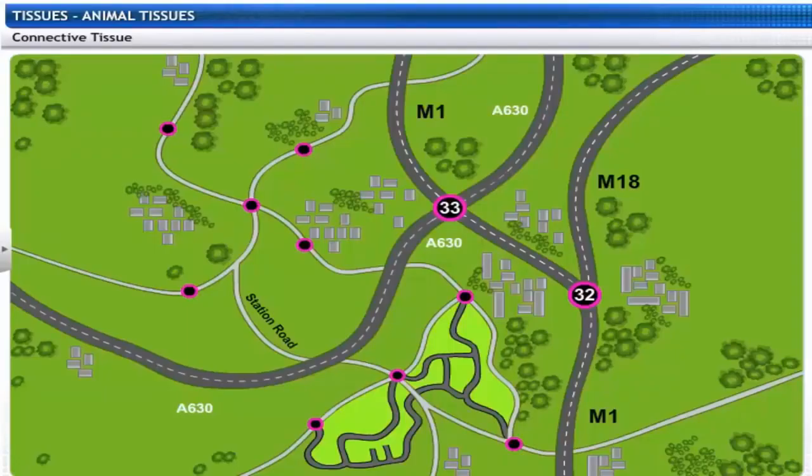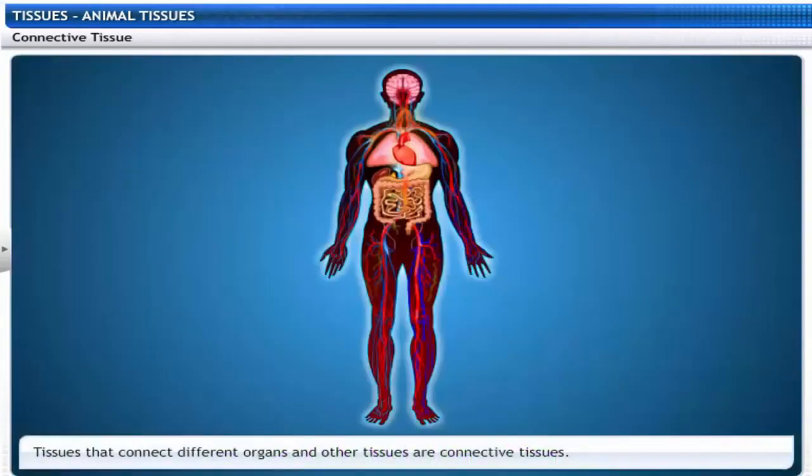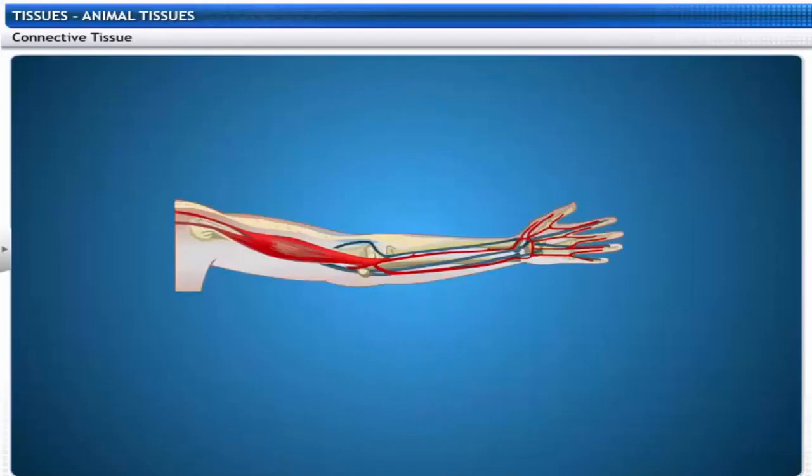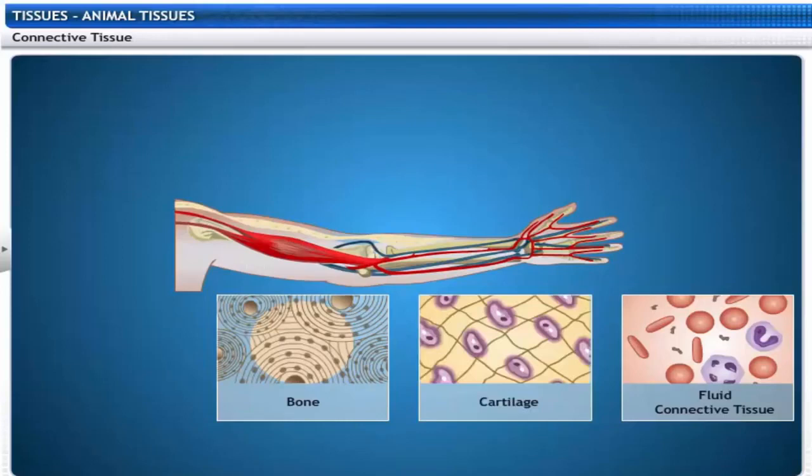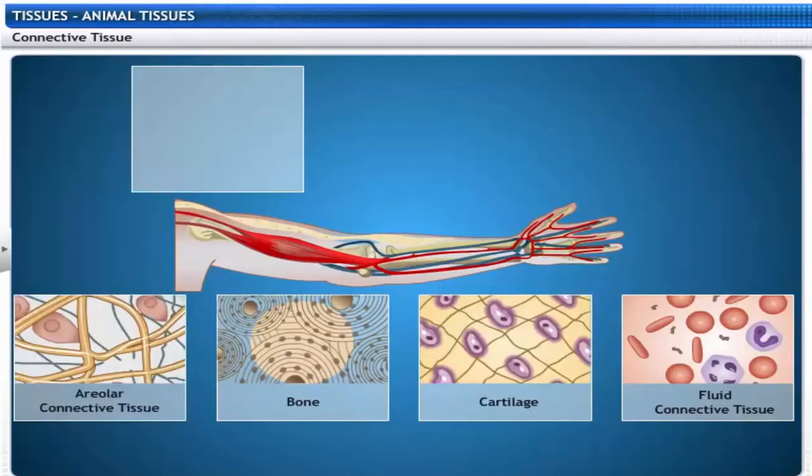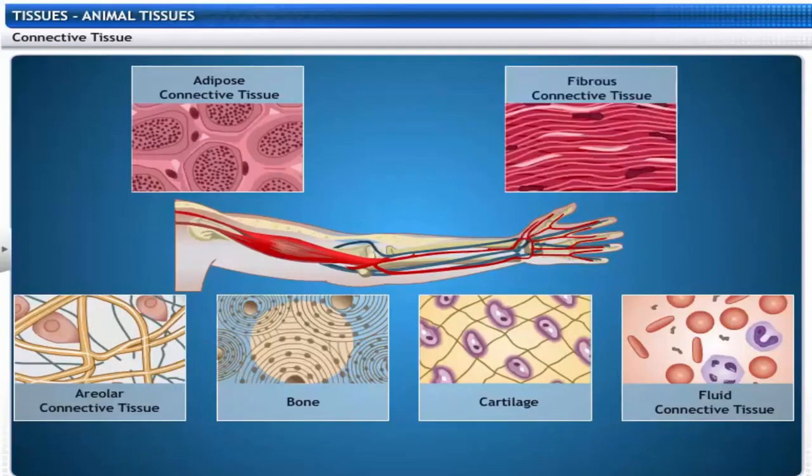This is a network of roads that connects different places to each other. Similarly, the animal body also has its own network of tissues that connects different organs and tissues. It is the connective tissue. Connective tissues are of different types depending on their shape and functions. Let's take a detailed look at each of them.